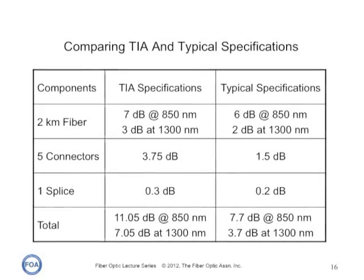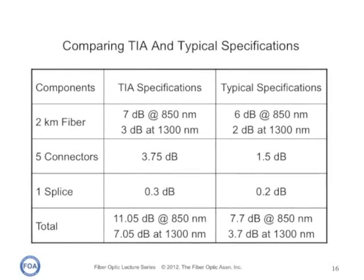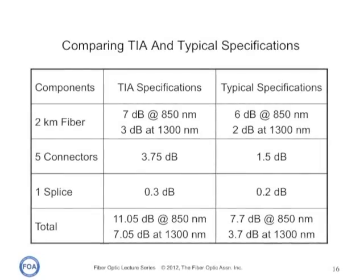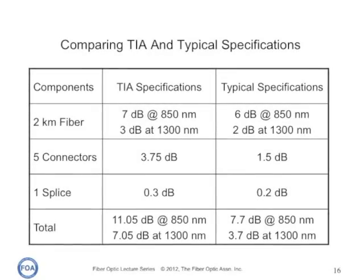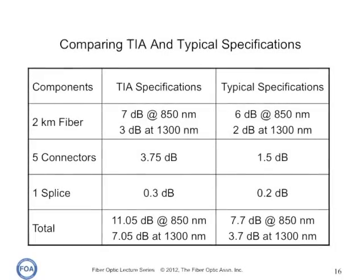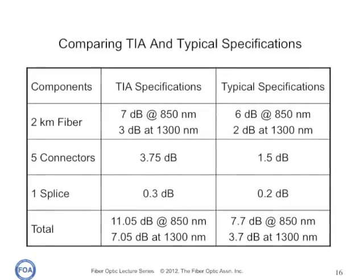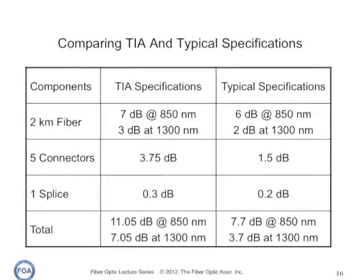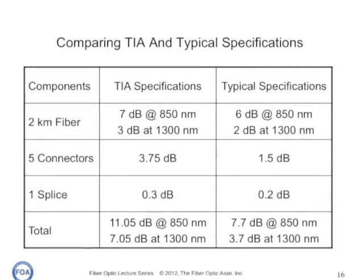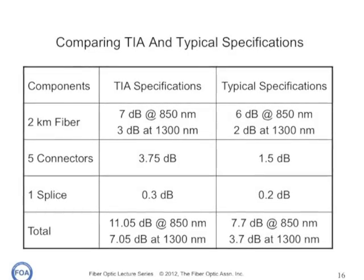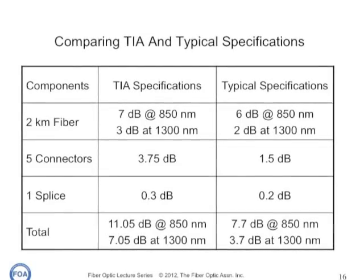Which component specs should you choose? We generally suggest that you use your judgment. The TIA specs are definitely worst case — for example, not too many connectors are accepted at three-quarters of a dB of loss. But even with pre-polished splice connectors, it's easy to do connectors at half a dB or better. We suggest you look at the components you're using and pick more typical values when you do your loss budget, especially when comparing them to the loss of the installed cable plant that you test.